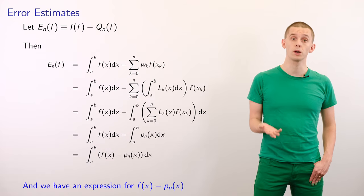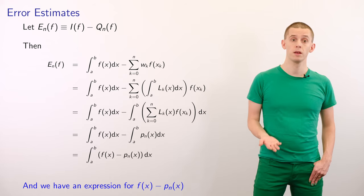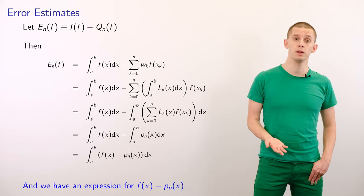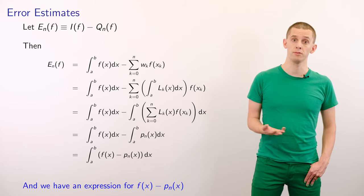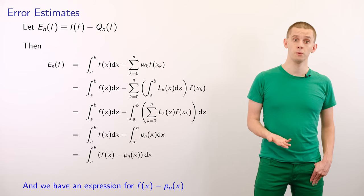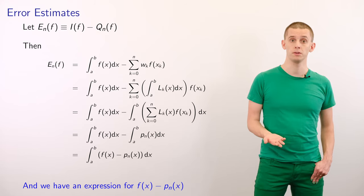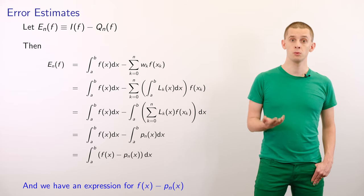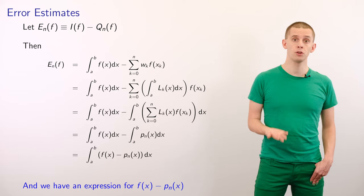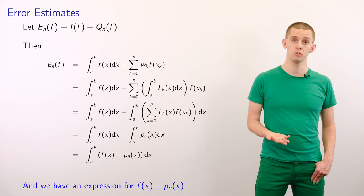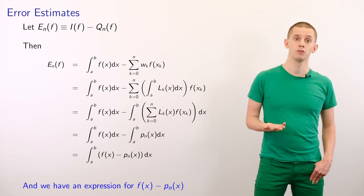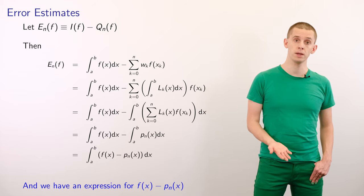Let's now look at estimating the error associated with our quadrature formula. We'll define en of f as i of f minus qn of f. So en of f equals the integral from a to b of f of x dx minus the sum from k equals 0 to n of wk times f of xk. Since our quadrature formula was based on integrating the polynomial interpolant, we can rewrite the quadrature formula in terms of the integral from a to b of pn of x dx, and therefore en of f equals the integral from a to b of f of x minus pn of x, dx.